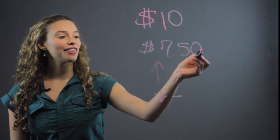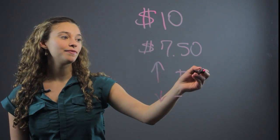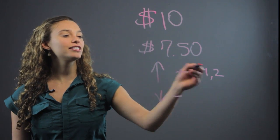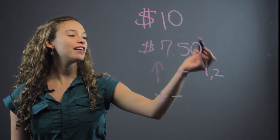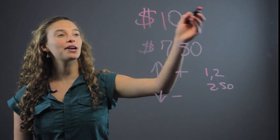You can start at the $7.50 and add up. You can add $1 to get $8.50 and then you can add $2 to get $9.50 and then you can add $0.50 so then you know it's $2.50 and you count it up to $10.